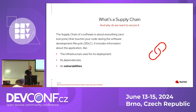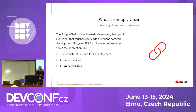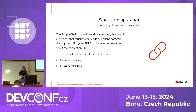A supply chain in a software ecosystem or IT context is everything that touches your software and your software development life cycle. It includes everything from the infrastructure where your software is going to be deployed, its dependencies — which is one of the most important things — and of course vulnerabilities, which is actually the most important thing in my opinion. This is very different from supply chains in other contexts because regarding software, it's very connected to the dependencies we use, which we often don't see when we deploy software or try to run it locally.